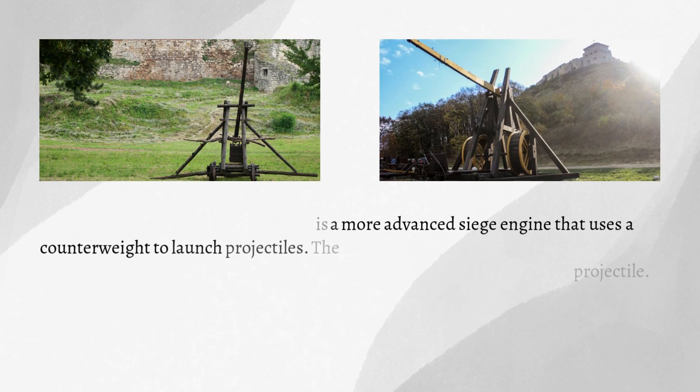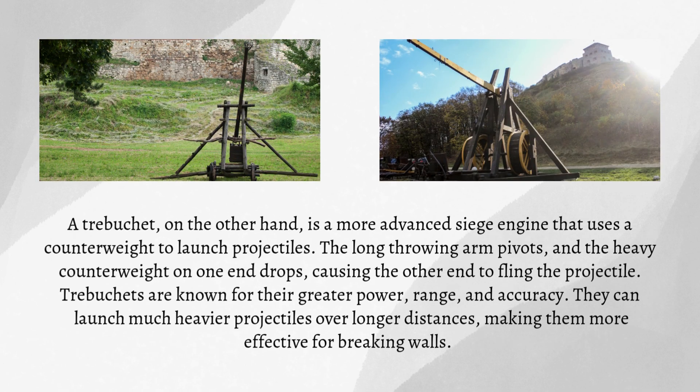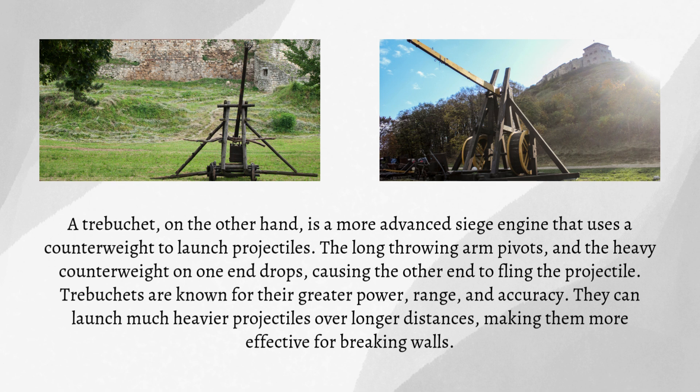A trebuchet, on the other hand, is a more advanced siege engine that uses a counterweight to launch projectiles. The long throwing arm pivots and the heavy counterweight on one end drops, causing the other end to fling the projectile. Trebuchets are known for their greater power, range, and accuracy.